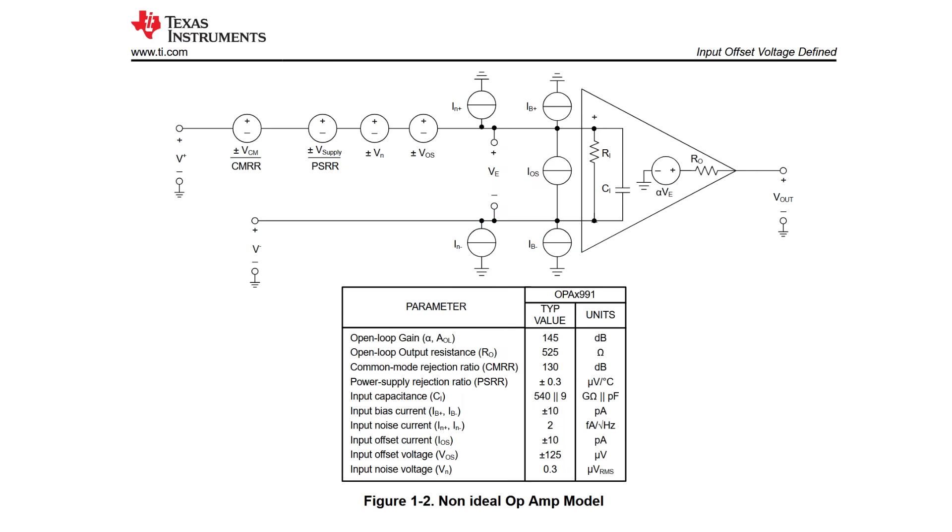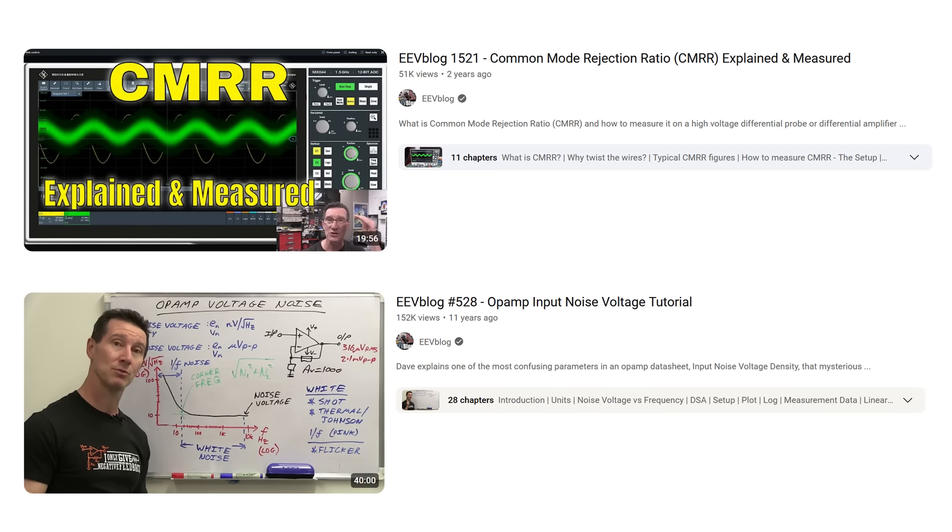Okay, so far we've talked about voltage swings, offset voltages, slew rate, and gain bandwidth product. But there are way more non-idealities in op-amps. Far too many for one video. If you want to learn about things like common mode rejection ratio and input noise, check out these videos on the EEV blog.